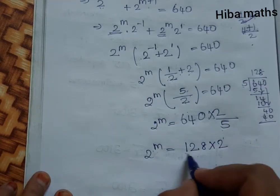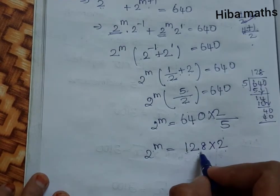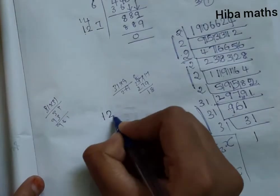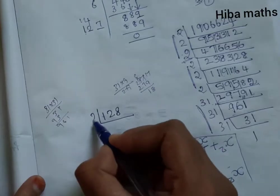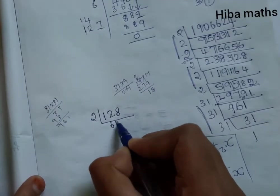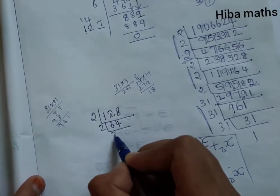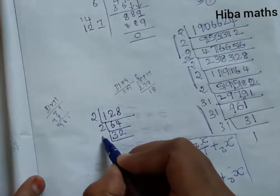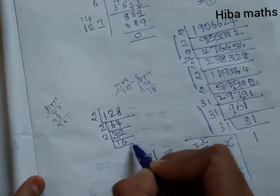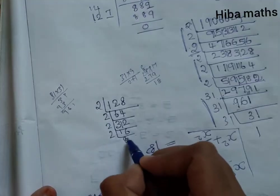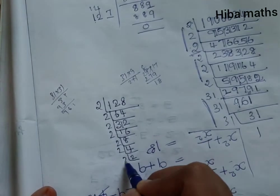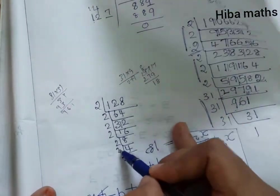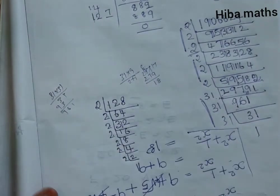To find what power 128 is, we divide repeatedly by 2: 128, 64, 32, 16, 8, 4, 2, 1. Counting these divisions: 1, 2, 3, 4, 5, 6, 7. So 128 = 2^7.